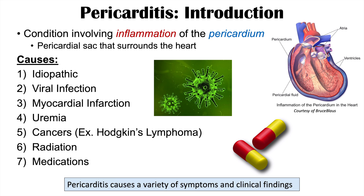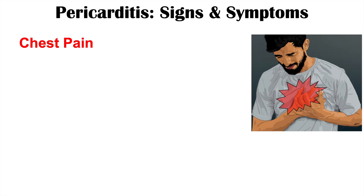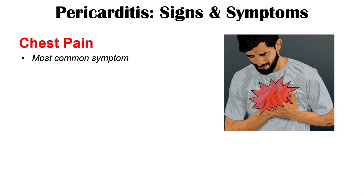Pericarditis, this inflammation of the pericardial sac, causes a variety of signs and symptoms, and we're going to talk about those in the upcoming slides. Let's first talk about the main symptom that can occur with pericarditis, and that is chest pain. This chest pain is actually going to be the most common symptom in pericarditis.